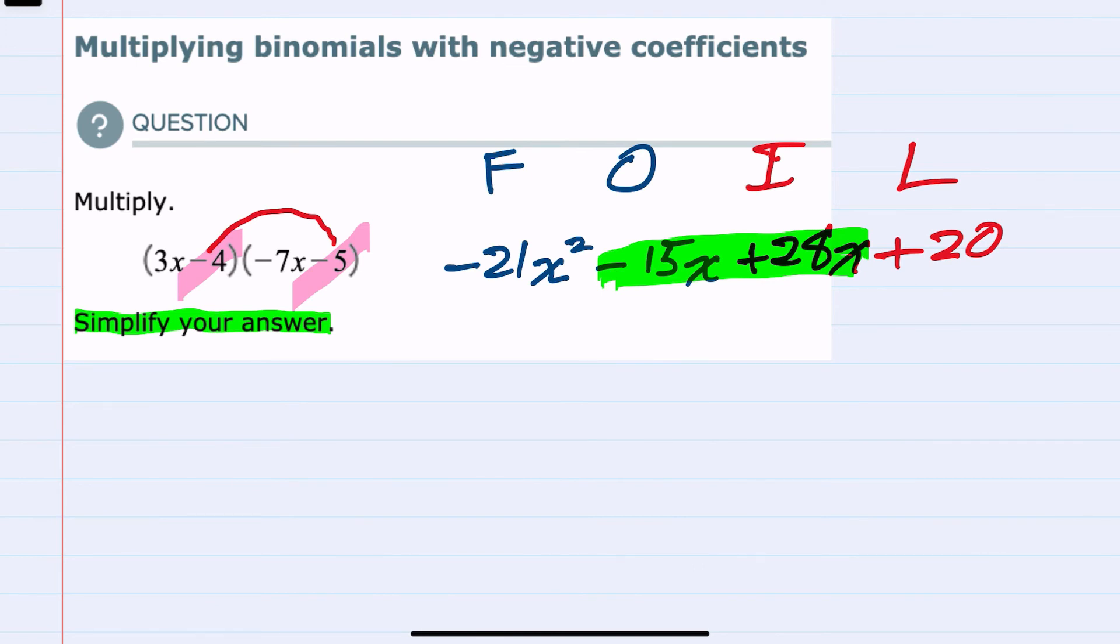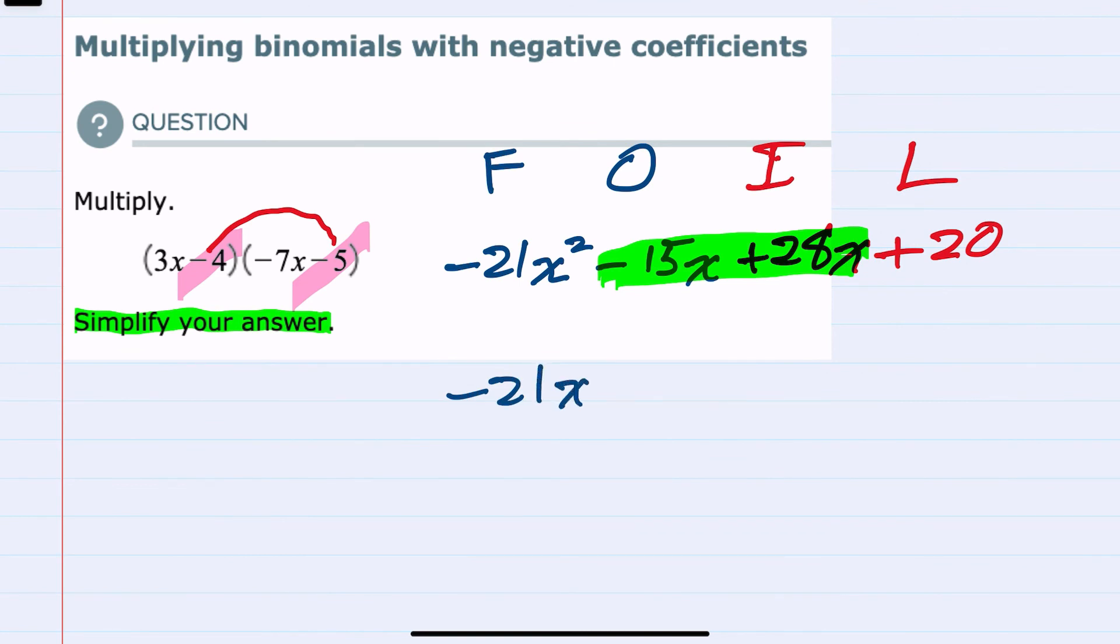We only have one x squared term, so I'm just going to bring that down, minus 21x squared. Combining the middle terms, minus 15x plus 28x leaves us with 13x, and then bringing down the constant term plus 20 would be our simplified solution.